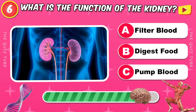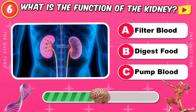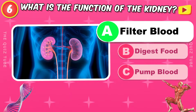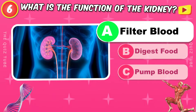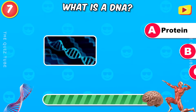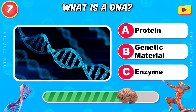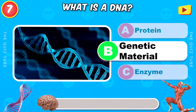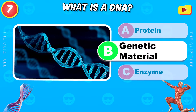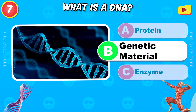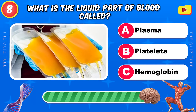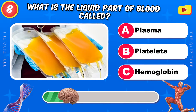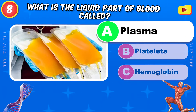What is the function of the kidney? To filter the blood. What is DNA? It's the genetic material. What is the liquid part of blood called? The plasma.